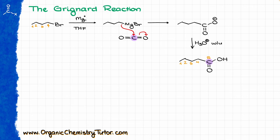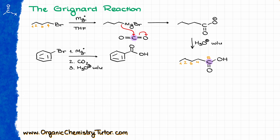The cool part about the Grignard reagent is that we are not limited by the nature of the carbon bearing the halide. We can use primary, secondary, tertiary alkyl halides, or even SP2-hybridized halides. For instance, if I start with bromobenzene, where the bromine is sitting directly on the aromatic ring and an SN2 substitution would be physically impossible, I can still make a Grignard reagent by reacting bromobenzene with magnesium, then treat the resulting Grignard with carbon dioxide — dry ice, for instance — do my acidic workup, and end up making a carboxylic acid. So this way, I can make a carboxylic acid from far more starting materials than the nitrile route would allow.